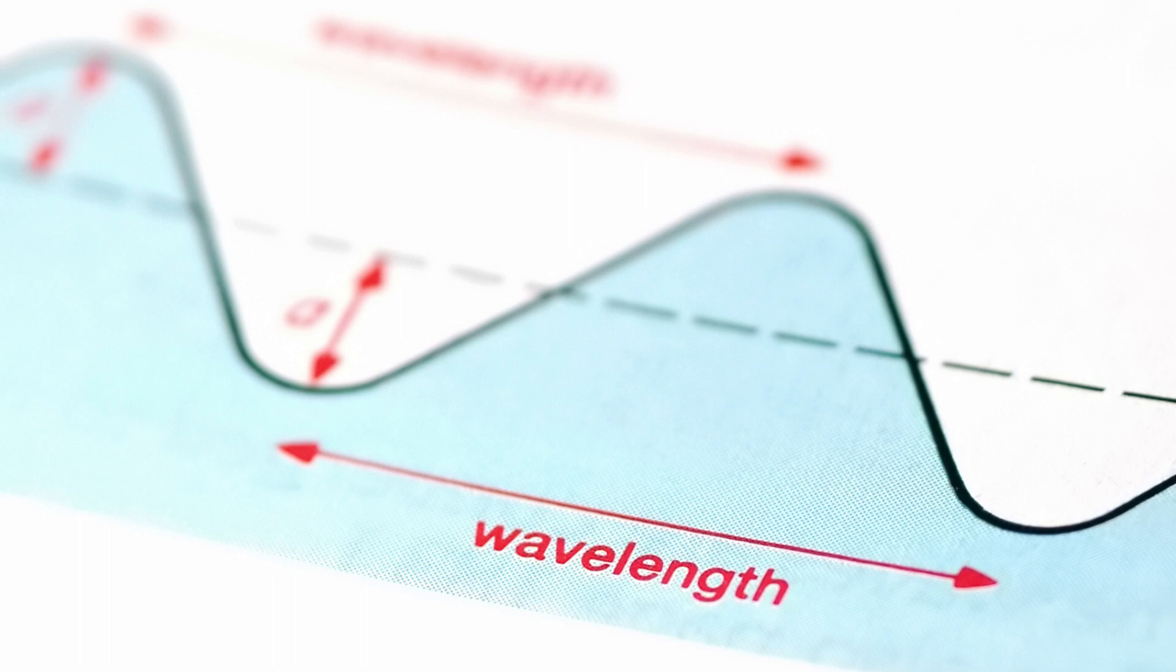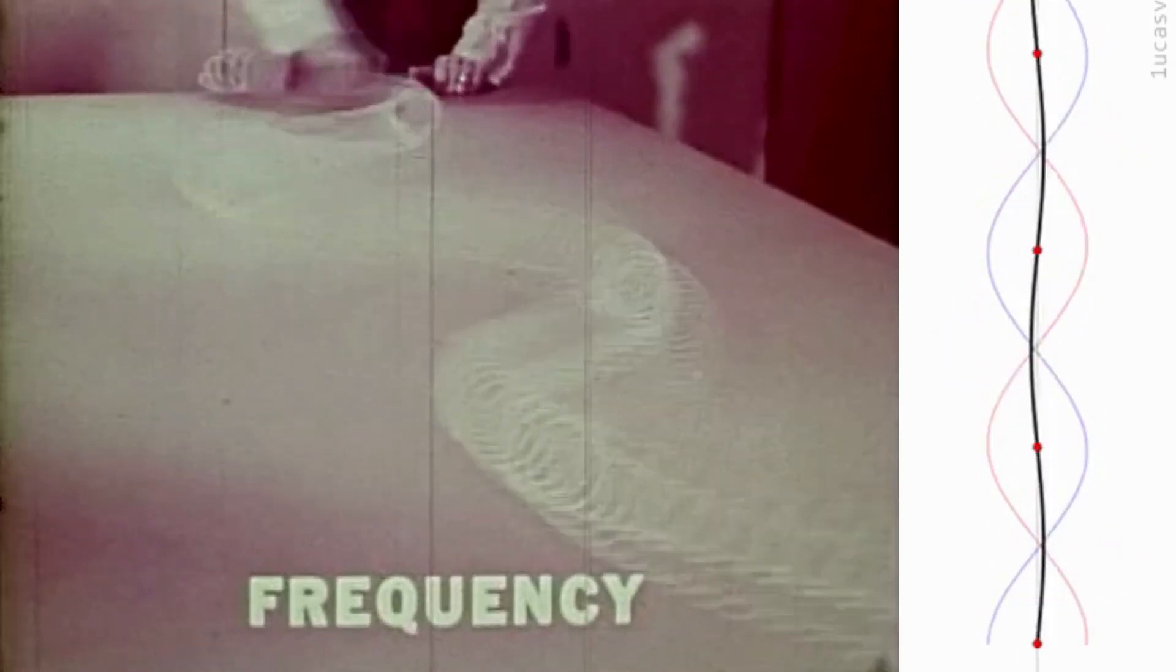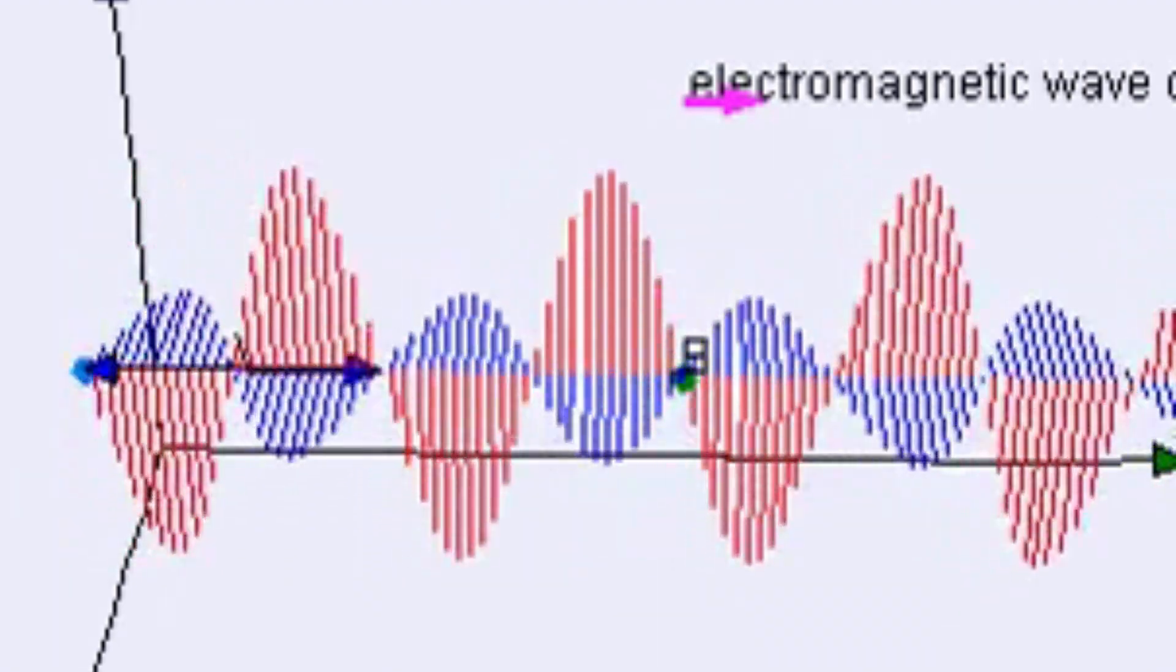One important characteristic of waves is their wavelength, which is the distance between two points on the wave that are in phase. Waves also have a frequency, which is the number of wavelengths that pass a point in a given time. The energy of a wave is related to its amplitude, which is the height of the wave.